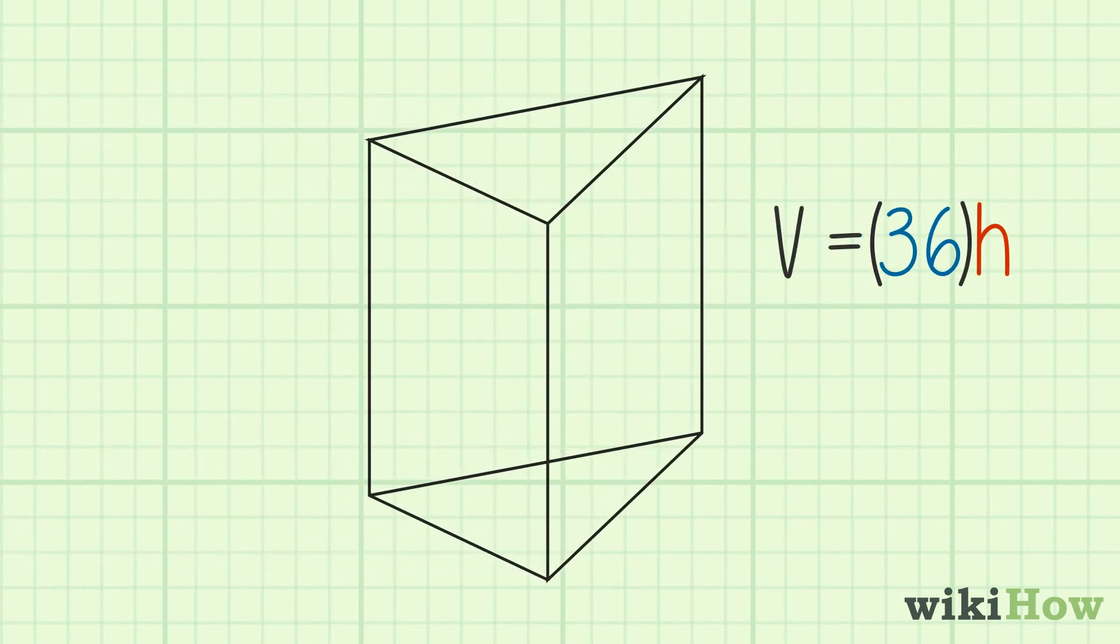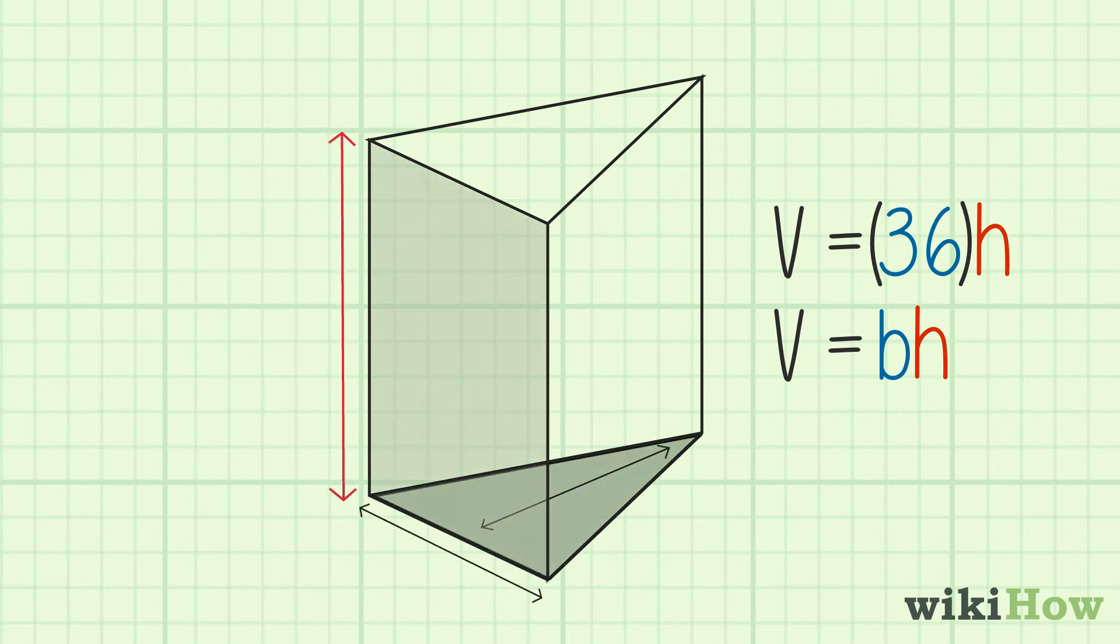Next, plug the area into the formula for finding the volume of a triangular prism, which is v equals base times height, or volume equals the area of the base multiplied by the height of the prism.